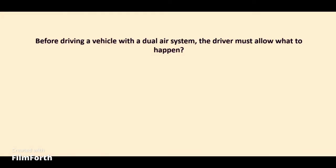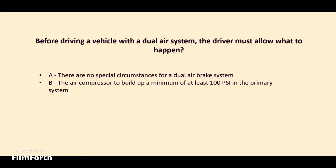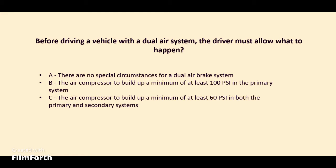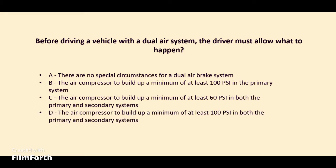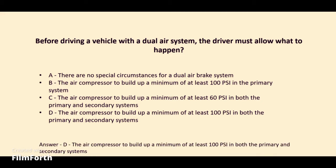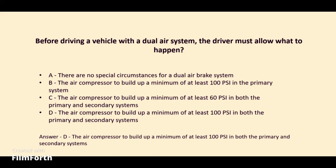Before driving a vehicle with a dual air brake system, the driver must allow what to happen? A. There are no special circumstances for a dual air brake system. B. The air compressor to build up a minimum of at least 100 PSI in the primary system. C. The air compressor to build up a minimum of at least 60 PSI in both the primary and secondary systems. D. The answer: The air compressor to build up a minimum of at least 100 PSI in both the primary and secondary systems.